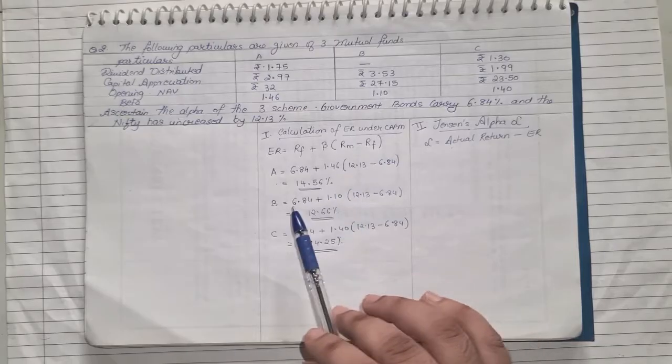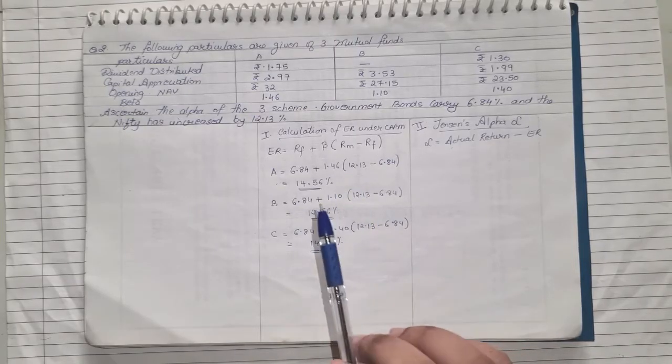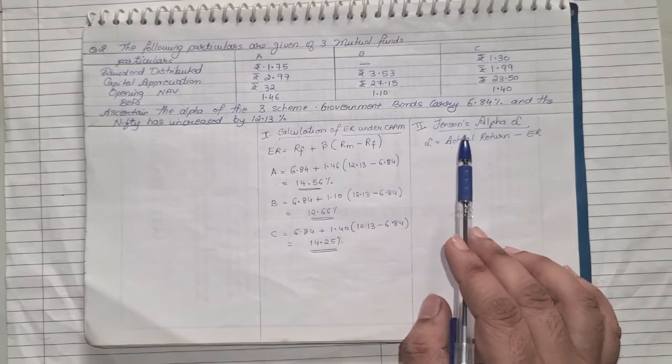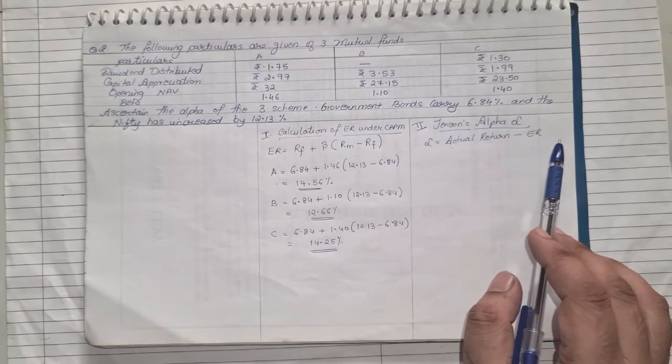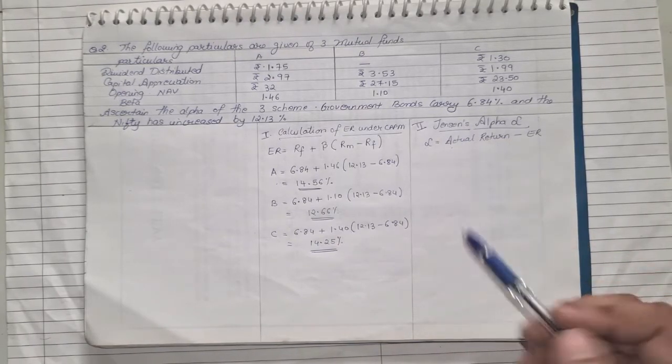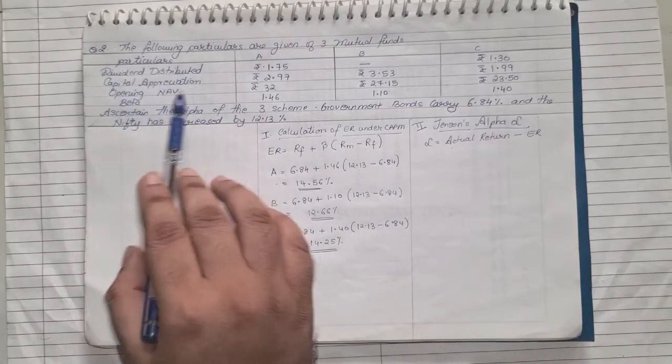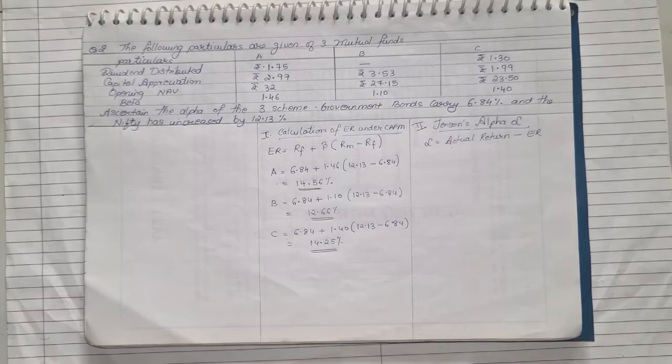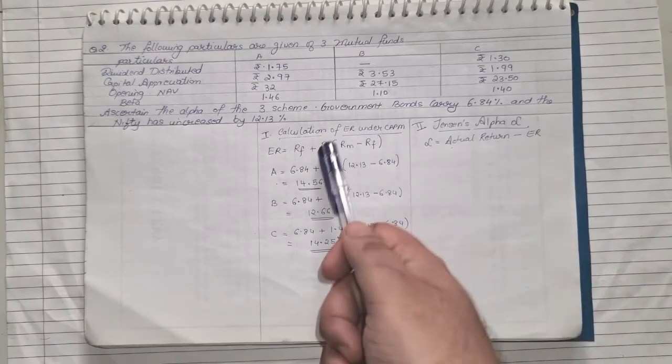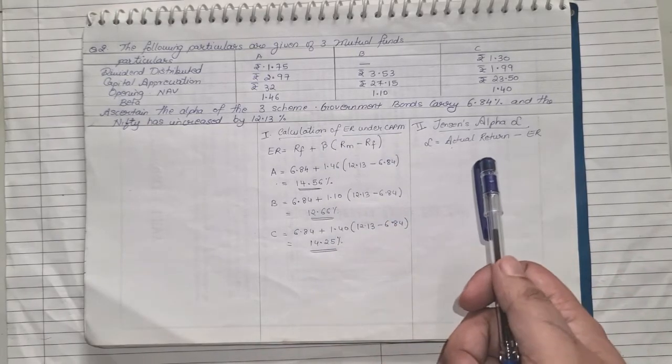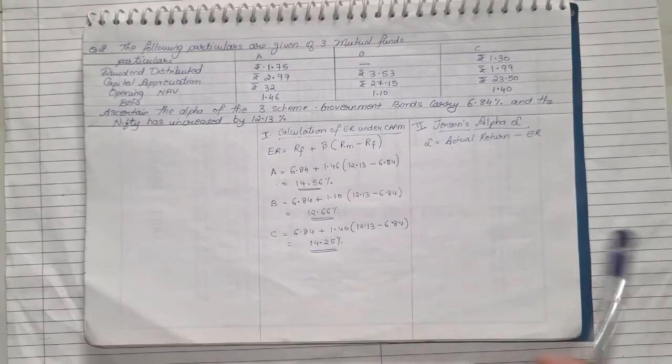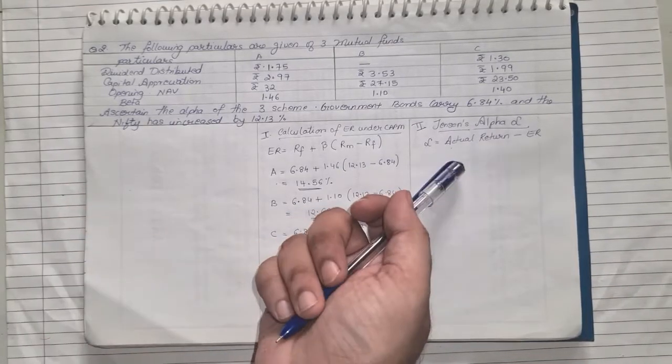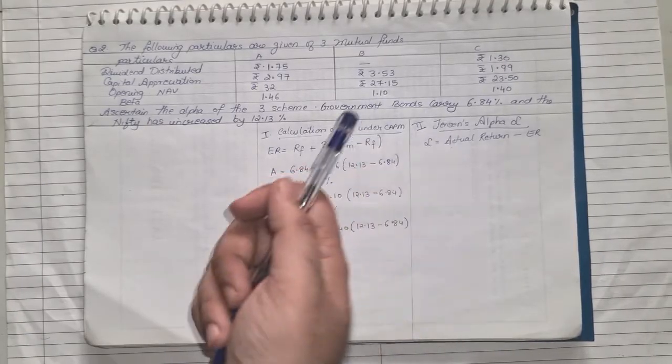Simple, just need to note down the formula, substitute the value, and you will get your expected return. Now let us go to second part where we need Jensen's alpha. The formula is actual return minus expected return. Now if you look at the question, they have given you dividend, capital appreciation, opening NAV, beta, but they haven't given you actual return. Expected return you have already found, but we haven't been given actual return, so we'll have to first find the actual return. So this is the second type of sum where actual return is not given to us.